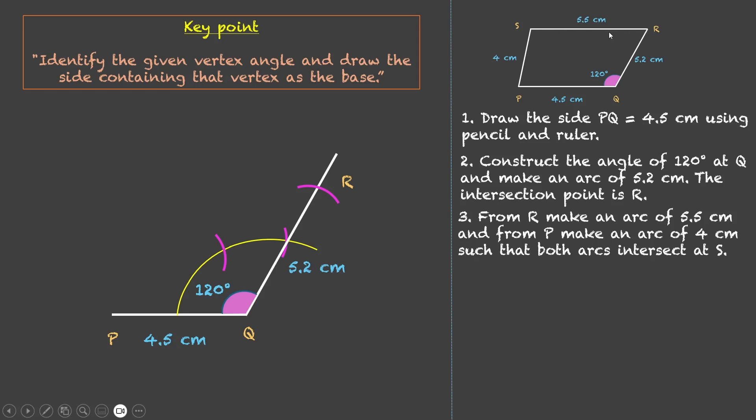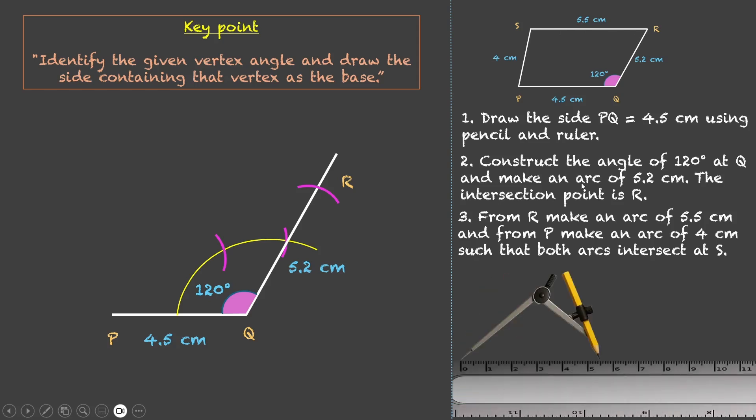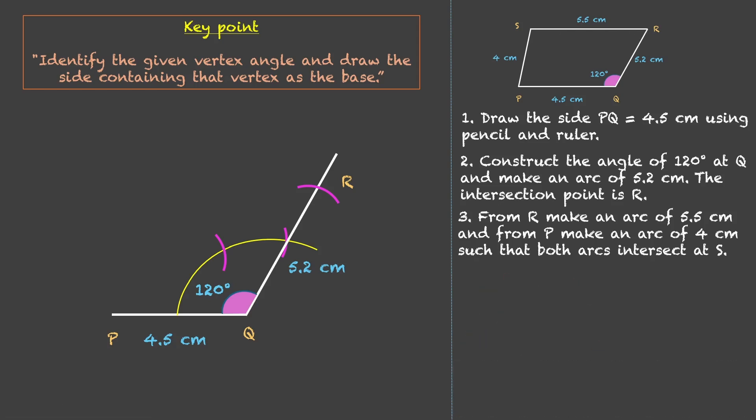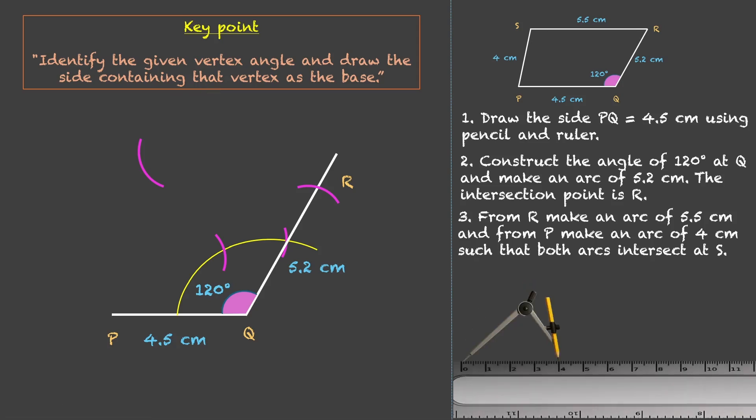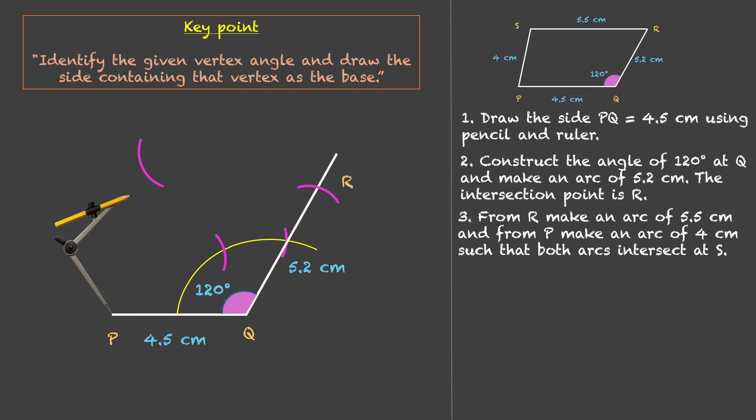Now we need to open our compass to 5.5 cm. Keeping the needle at R, we will make an arc of 5.5. You can make a big arc over here so that you have a good enough arc so that once you make an arc from here, it intersects. Next, we'll open our compass to 4 cm. Keep it at P and make another arc. Now these two intersect at this point which we'll call S.